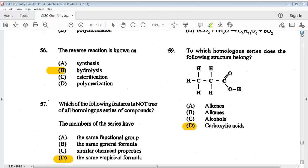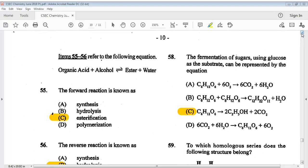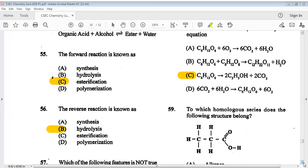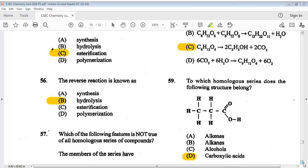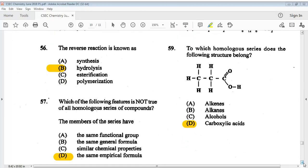Question fifty-eight: the fermentation of sugars using glucose as a substrate can be represented by the equation. The answer is C. Question fifty-nine, the answer is D.